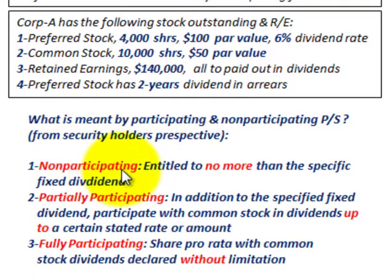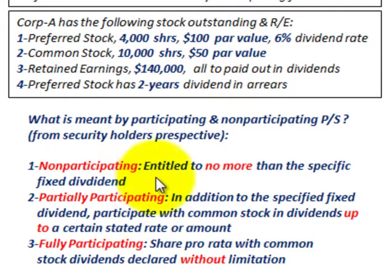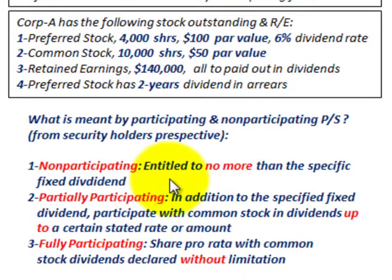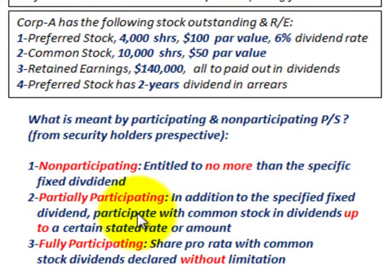Number one, non-participating — you're entitled to no more than the specific fixed dividend rate on the preferred stock. So in this case, we had a 6% fixed dividend rate, so the holder couldn't get more than that 6% dividend rate. Now looking at partially participating preferred stock — this is where, in addition to the specified fixed dividend rate, you participate with the common stockholders in any dividends up to a certain stated rate or amount.